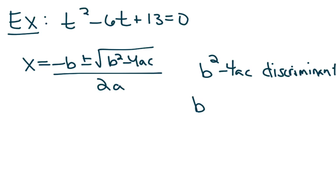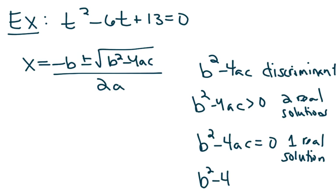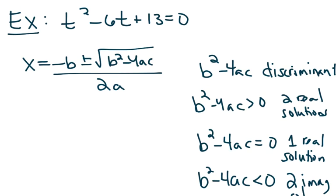If the discriminant is greater than 0, you get two real solutions. If b squared minus 4ac equals 0, you get one real solution — only the vertex touches the x-axis, so we call it a double root. If the discriminant is negative, you get a negative number under the square root sign, which means the answer is imaginary — two imaginary solutions. You can also just graph the quadratic: if it hits the x-axis twice, two real solutions; if only the vertex touches, one real solution; if the parabola never hits the x-axis, two imaginary solutions.